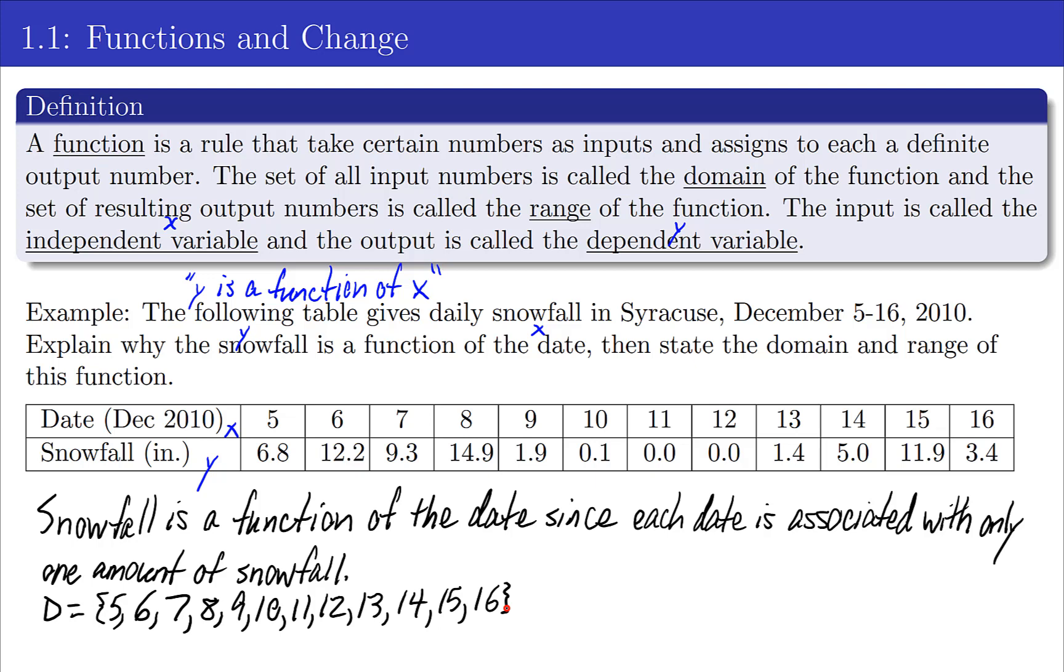So this is exactly what you would think it would be: five, six, seven, and so on. Now for the range we're going to do the same thing. It's going to be the set of all the output values. However, there's one thing I want to point out. Your range would be 6.8, 12.2, 9.3, and so on. But now this 0.0 showed up twice. One of the things about sets is it doesn't need repeats, so I don't need to show the 0.0 twice.